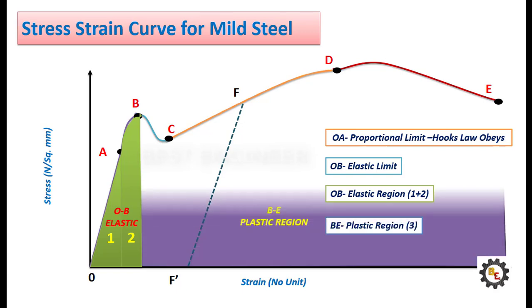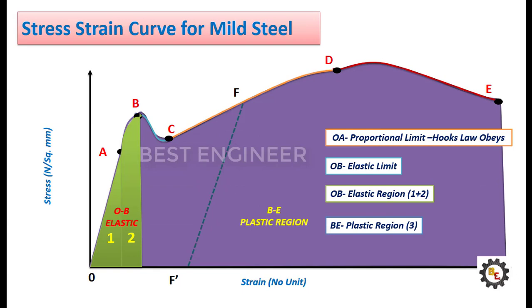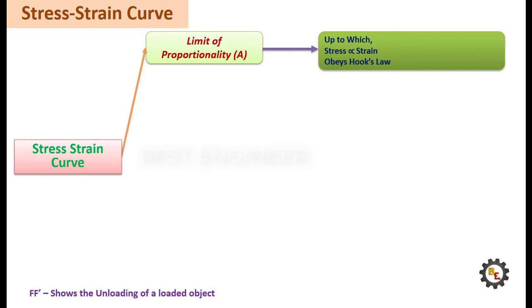From B plastic region. Let us see in detail. Point A, limit of proportionality. Up to this limit, stress will vary proportional to strain. It obeys the Hooke's law.